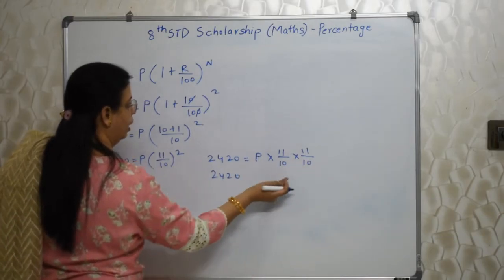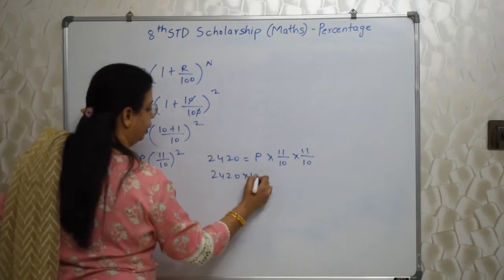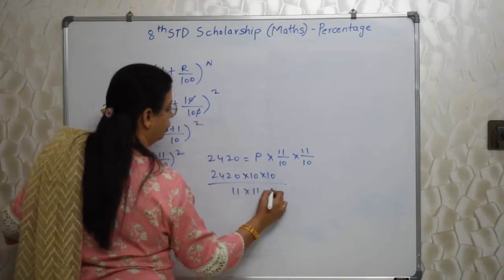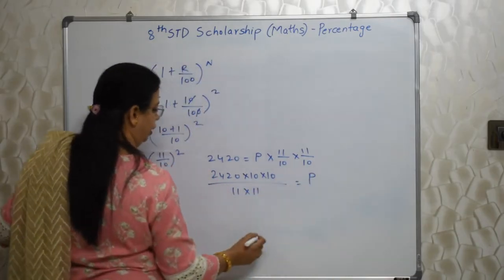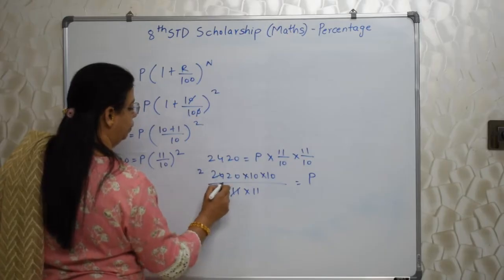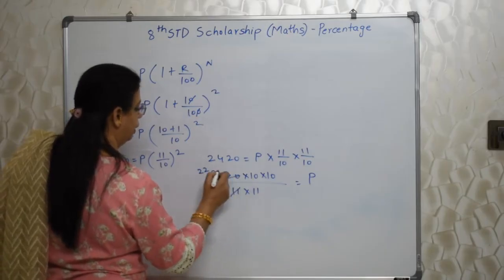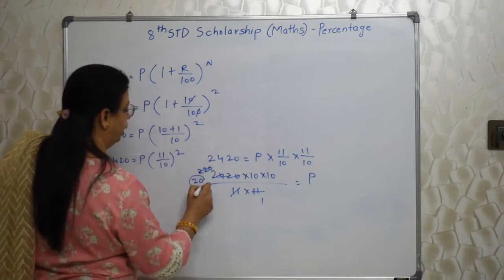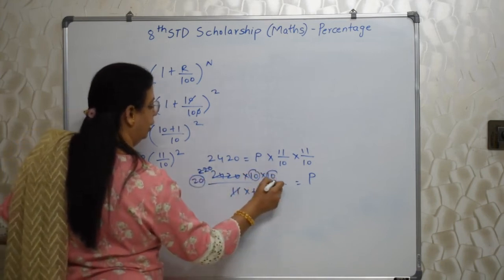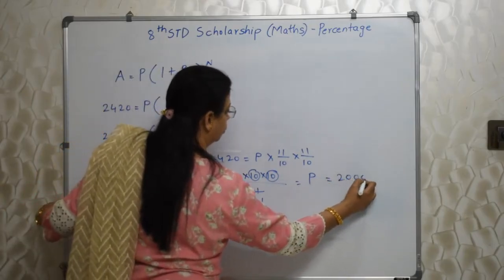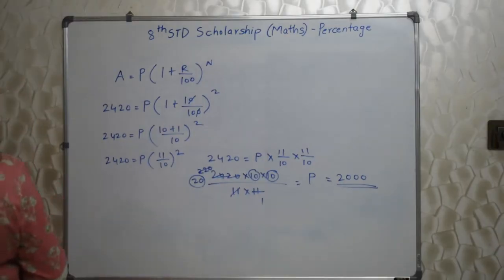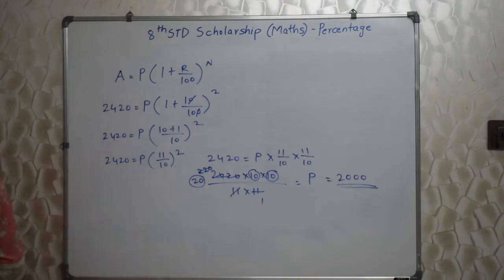So 2420 = P × (11/10) × (11/10). Rearranging, P = 2420 × 10 × 10 / (11 × 11). Calculating: 2420 / 121 × 100. 11 × 2 = 22, 11 × 2 = 22 — working through gives 2420 / 121 = 20. So P = 20 × 100 = 2000. The population 2 years ago was 2000.